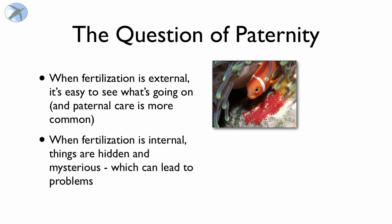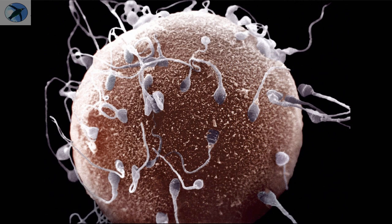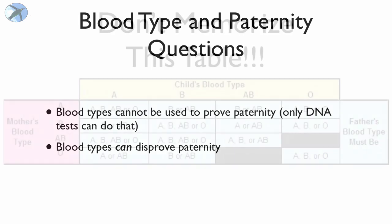What we have and what mammals have is internal fertilization. And when fertilization is hidden, and especially in the case of humans, when the gestation period is very long, this can lead to a lot of problems. You can't see what's going on. So the question of paternity is a very real one. We can actually use blood types not to prove paternity, but to disprove paternity.